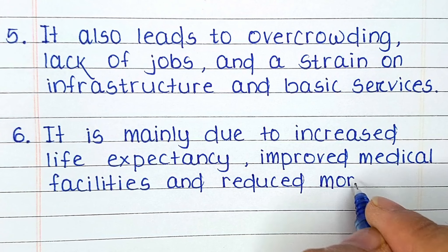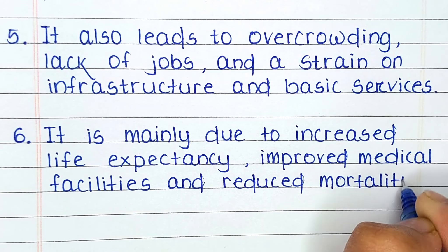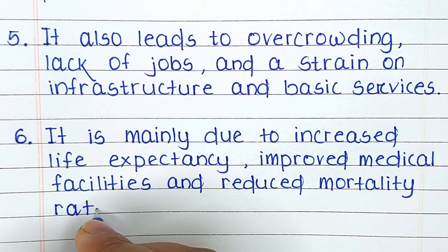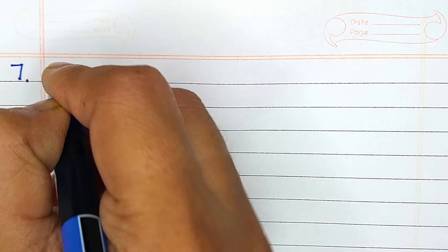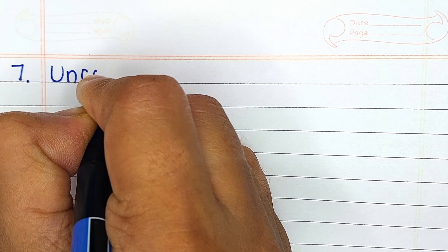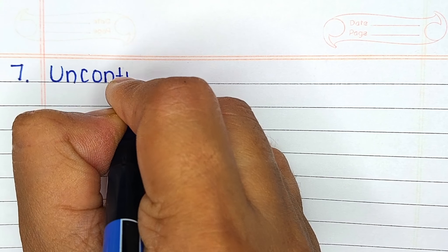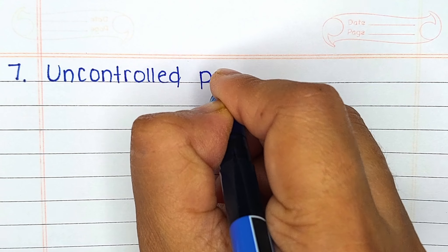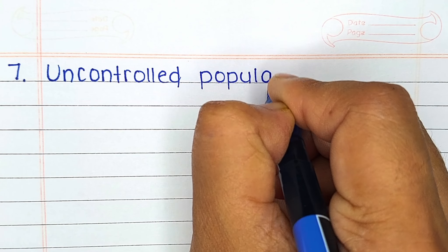Sixth line: It mainly takes place due to increased life expectancy, improved medical facilities, and reduced mortality rates.